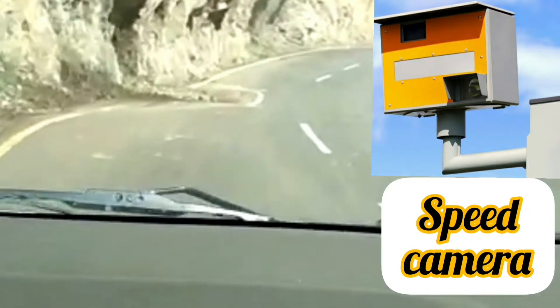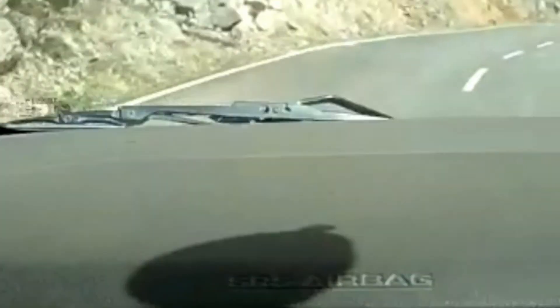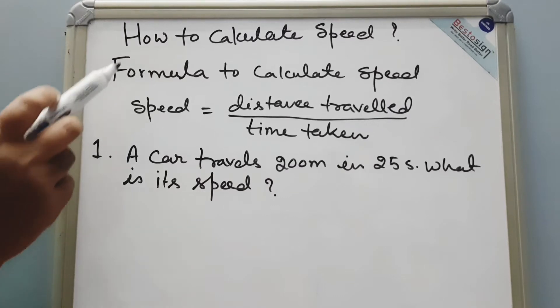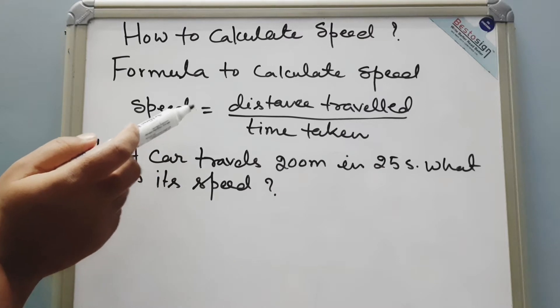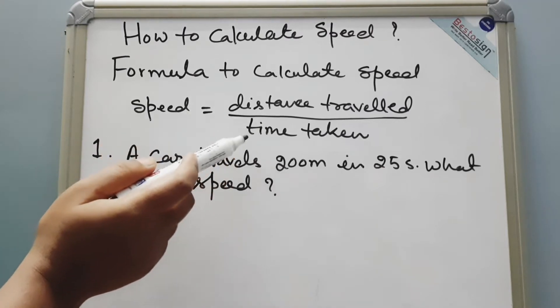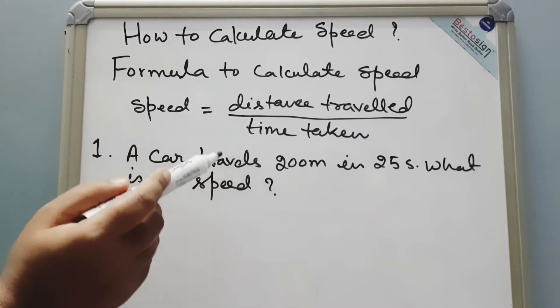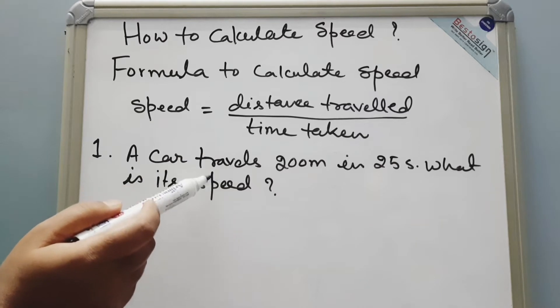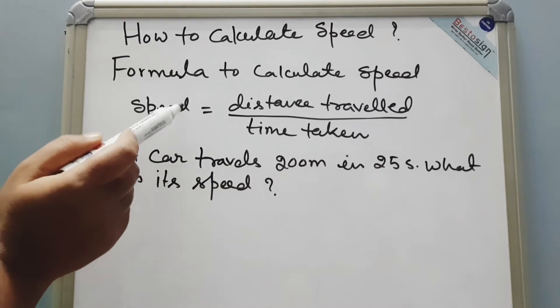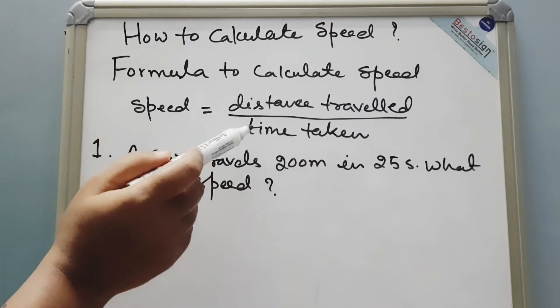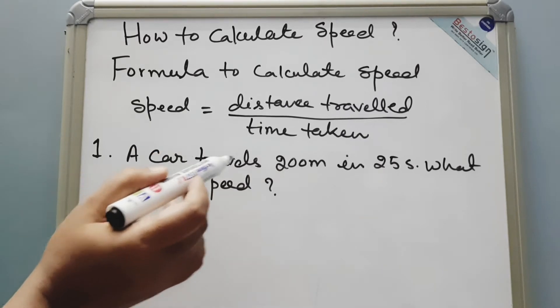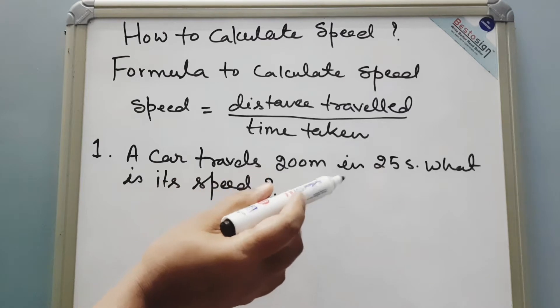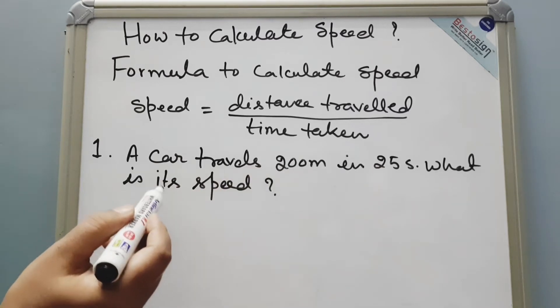Now we are going to learn how to calculate speed. This is the formula for speed: speed is equal to distance traveled divided by time taken. Now through this question we are going to understand how to utilize this formula to solve any question. Question is: a car travels 200 meters in 25 seconds. What is its speed?